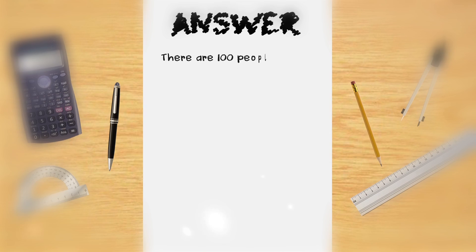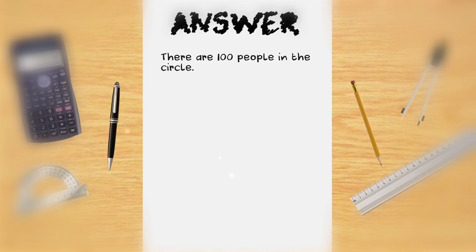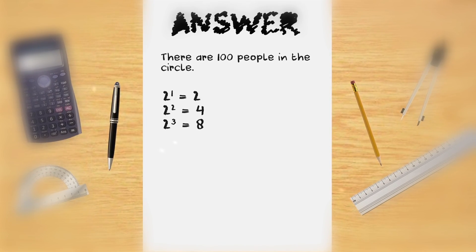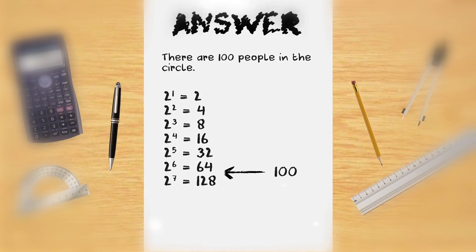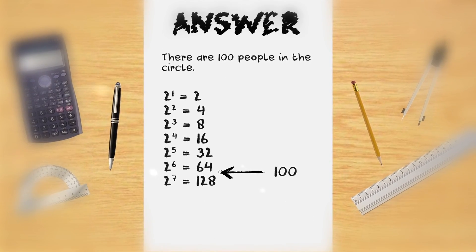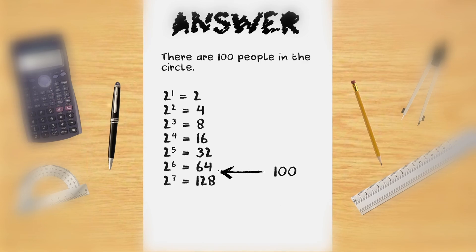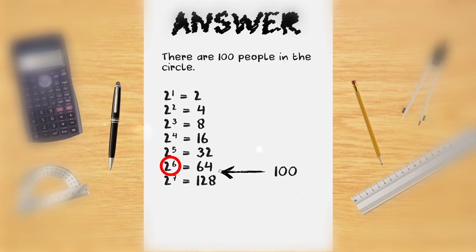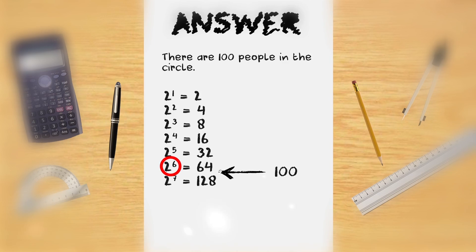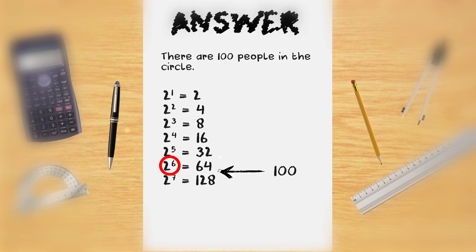For example, there are 100 people in the circle so if we write out the powers of 2, the number 100 lies between 2 to the power of 6 and 2 to the power of 7. In this case, 2 to the power of 6 or 64 is the greatest power of 2 that is less than the total number of people in the circle. Therefore,